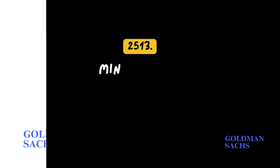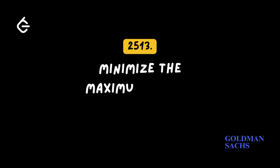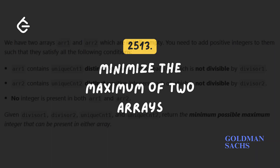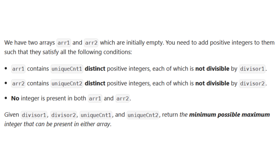The problem asks us to minimize the maximum integer present in two arrays A1 and A2. A1 should contain unique CNT1 distinct positive integers, none of which are divisible by a given divisor 1. Similarly, A2 should contain unique CNT2 distinct positive integers not divisible by divisor 2. The integers should be unique between the arrays.